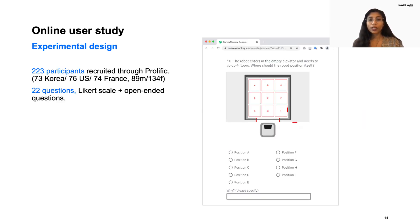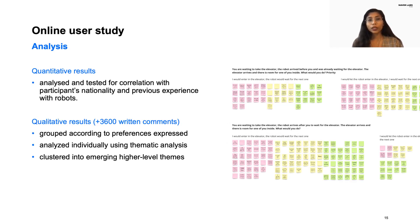We conducted an online survey study with 223 recruited participants from Korea, US, and France. Our survey included 22 multiple-choice questions, followed by mandatory open-ended comments that helped us understand the underlying reasons for their preference. All the collected quantitative results were analyzed to validate our hypothesis and also tested for correlation with participants' characteristics. We collected over 3600 written comments which were analyzed using thematic analysis.